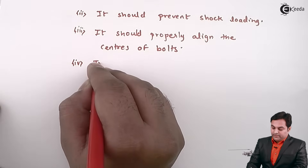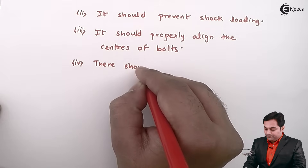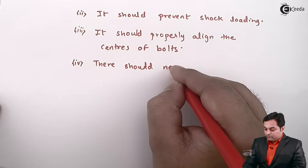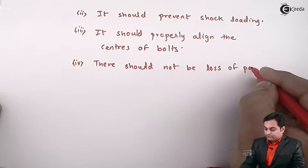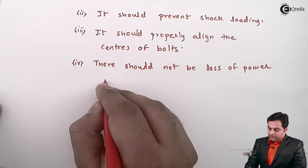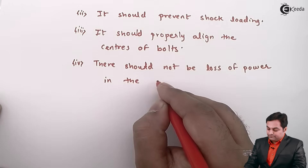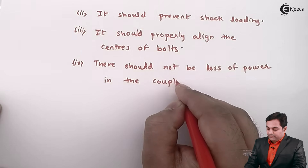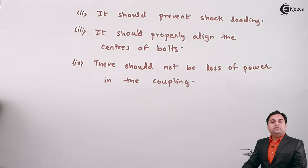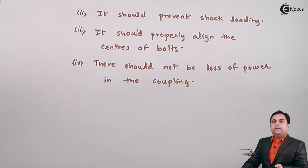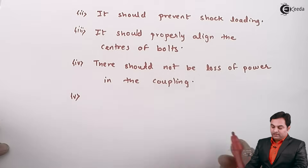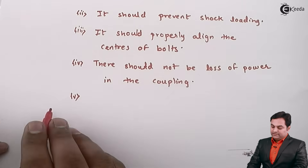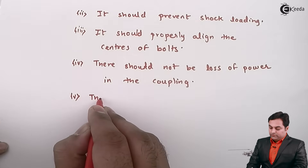The next function is that there should not be any loss of power in the coupling. When power is transmitted from one shaft to another through the coupling, there should be no power lost in the coupling itself.